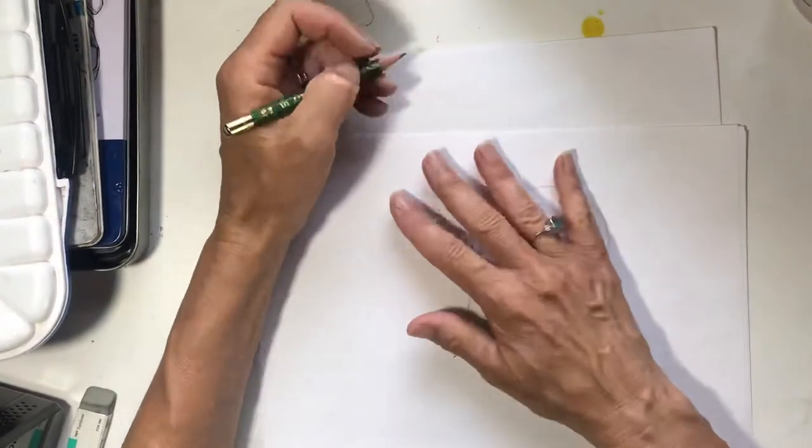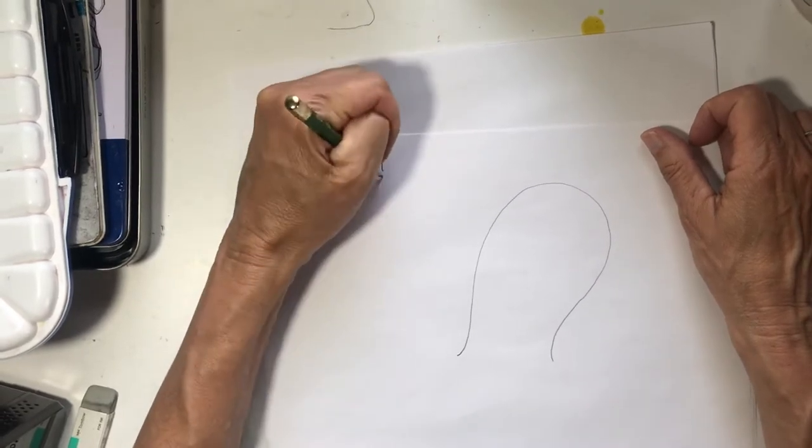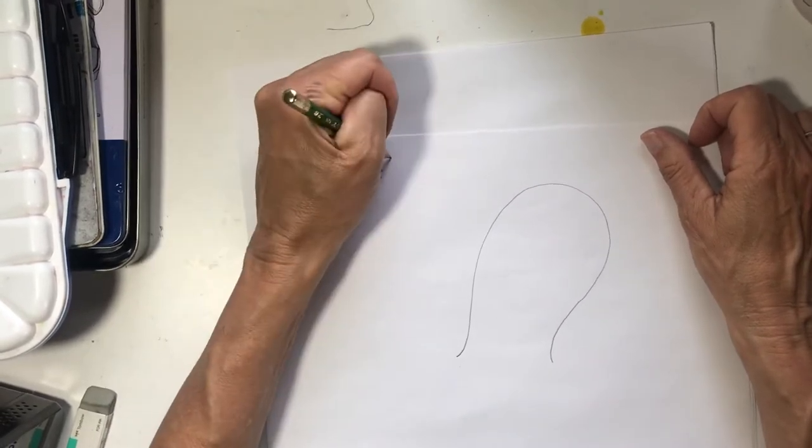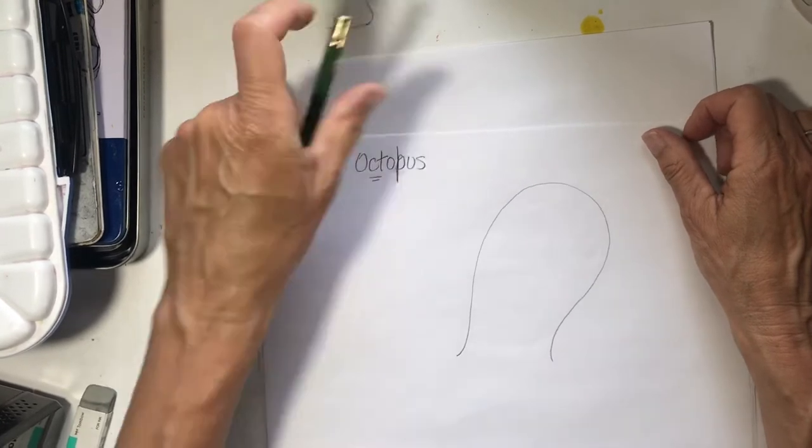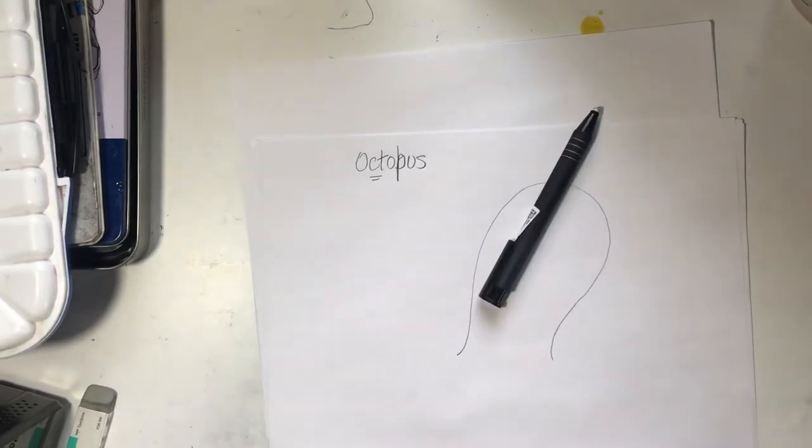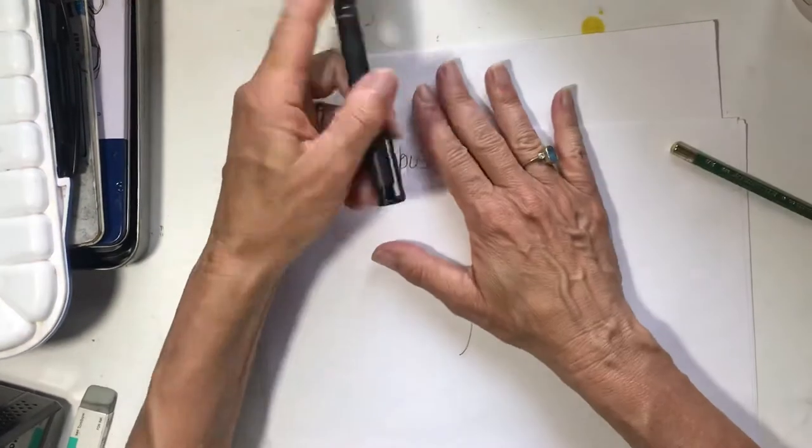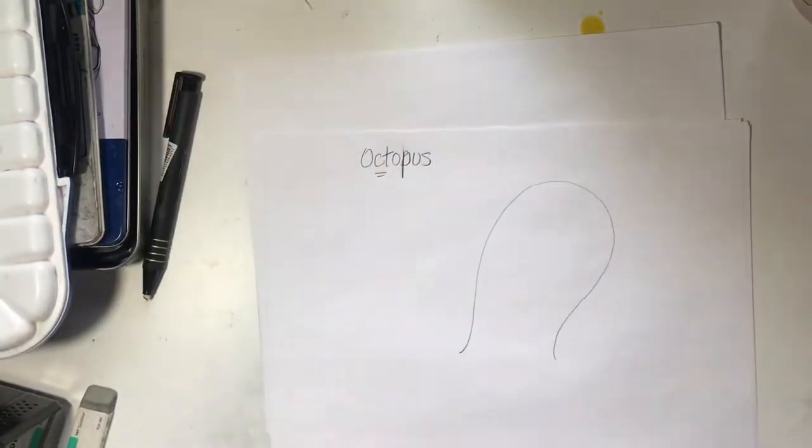I guess I should write this out what we're drawing. Oct means eight, plus us. I made a mistake. Octopus.